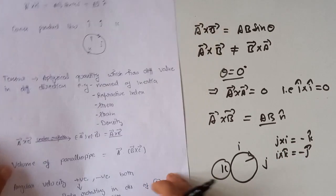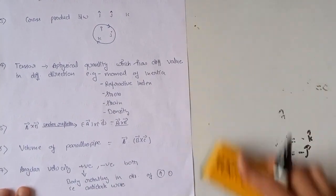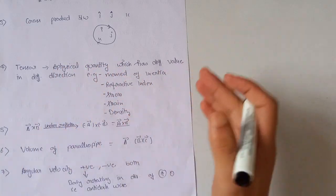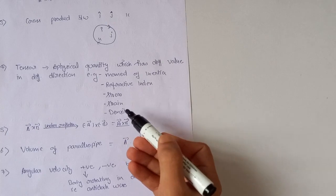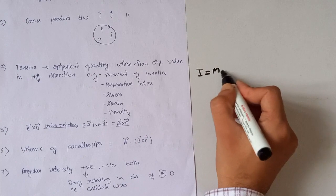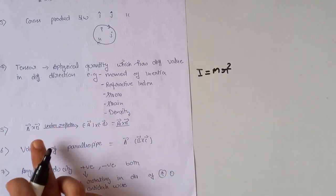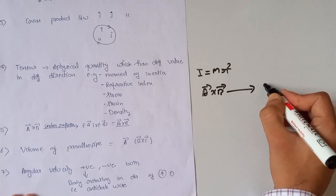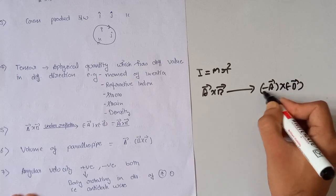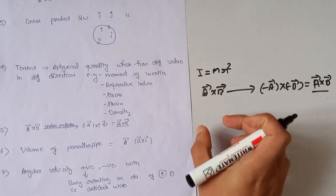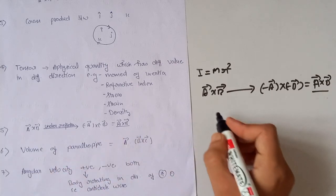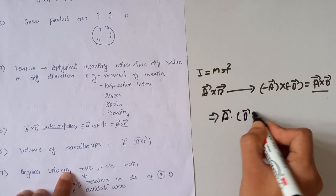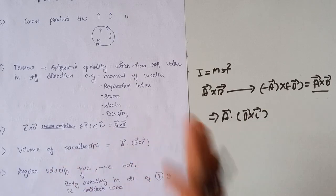A tensor is a physical quantity that has different values in different directions. Examples include stress, strain, density, refractive index, and moment of inertia (I = mr²). The cross product under reflection is always equal to a × b, since (−a) × (−b) = a × b. The volume of a parallelepiped is equal to a · (b × c).